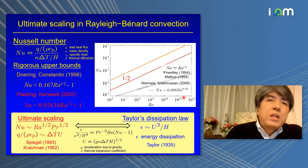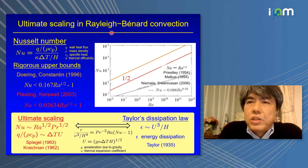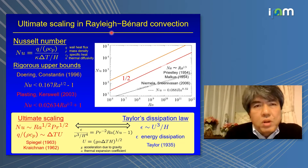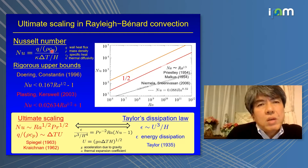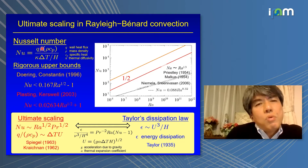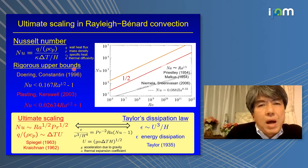Let me recall the ultimate scaling in Rayleigh-Bénard convection, which several speakers already talked about in this workshop. An important dimensionless parameter in this system is the Nusselt number — a dimensionless wall heat flux normalized with the thermal conduction heat flux. There are rigorous upper bounds on the Nusselt number in this flow, given by Doering, Constantin, and others.